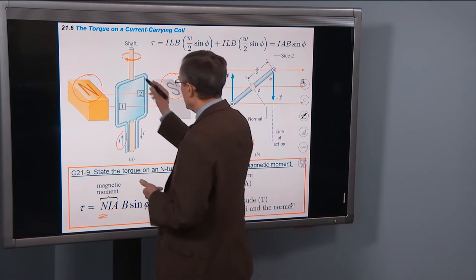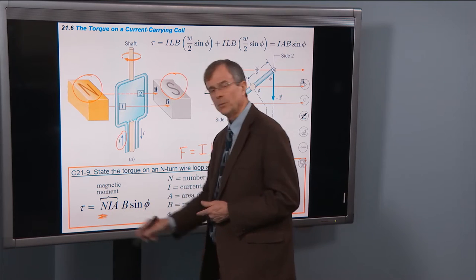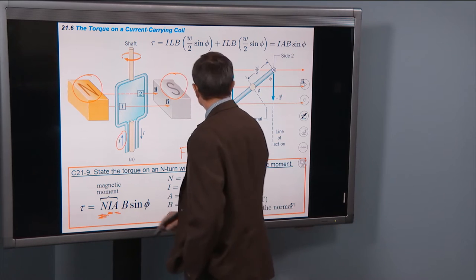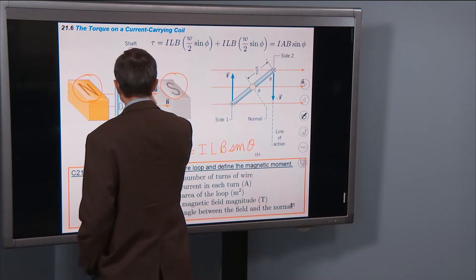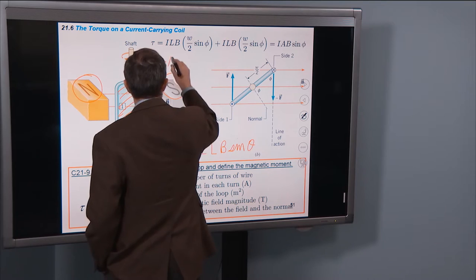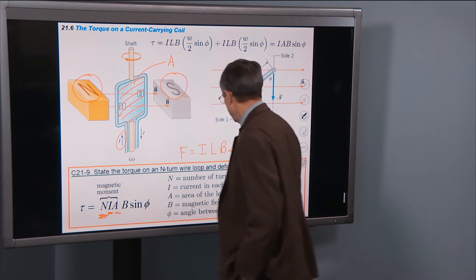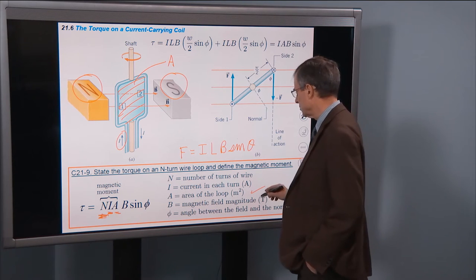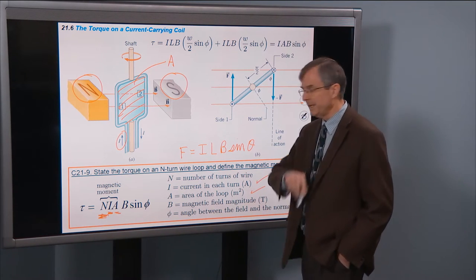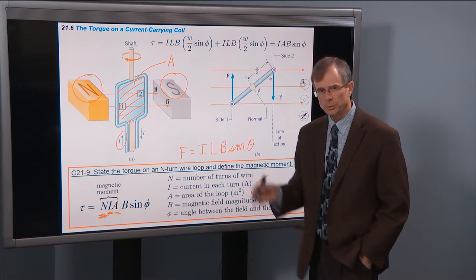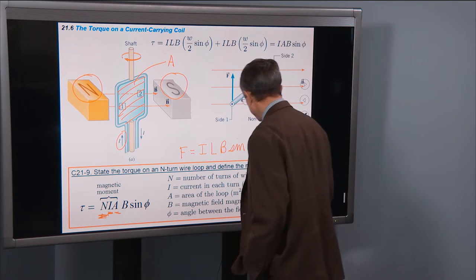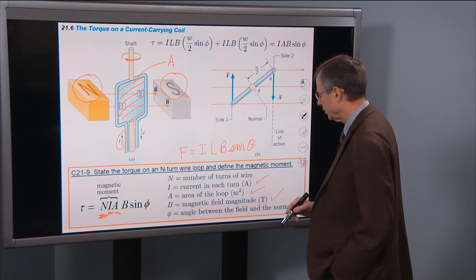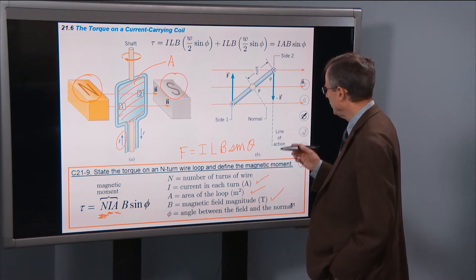This coil has only one turn and so in that case N here would be 1. I is the current in the coil. A is the cross-sectional area of the coil, so that's this area here, measured in meters squared. B is the magnetic field magnitude, and Φ is the angle between the field and the normal direction.